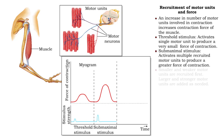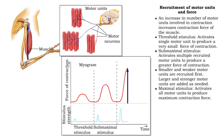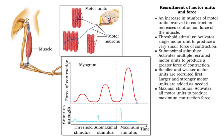Weaker motor units are recruited first. Stronger motor units are progressively added as more force is required and precision is less important. When all the motor units are activated simultaneously, the muscle generates its maximum contraction force.